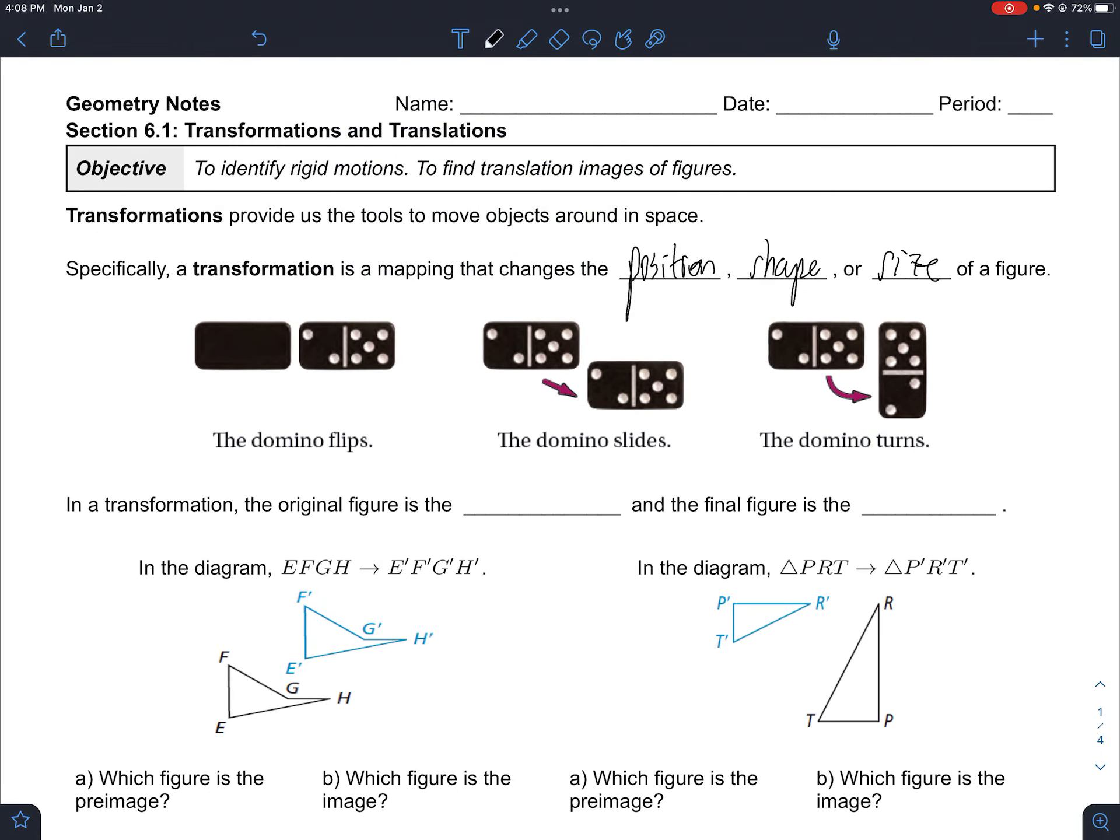We can see an example here - we see a flip happening, which is a reflection of the domino. We see a slide, which is a translation, and a turn, which is a rotation.